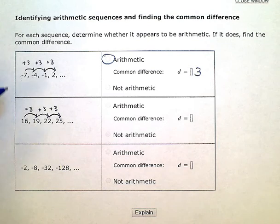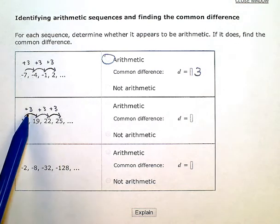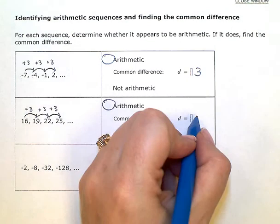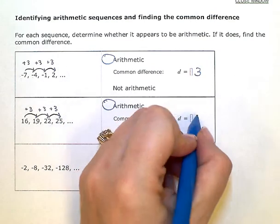So in a similar fashion to our previous sequence, to get from one term to the next term, we're following this constant pattern of adding 3. So this one is also arithmetic, and again, our common difference is 3.